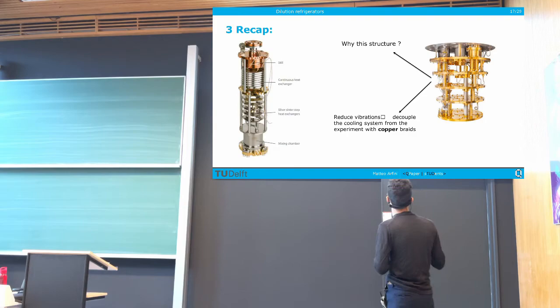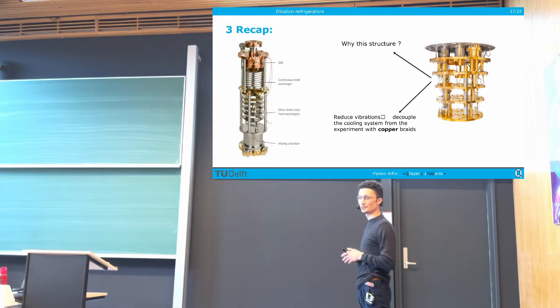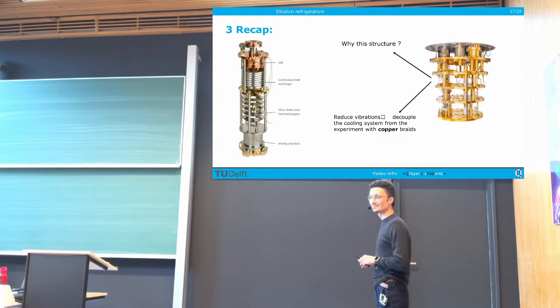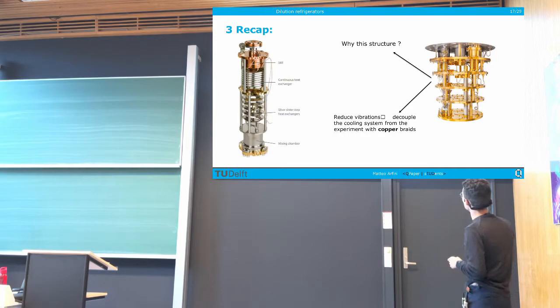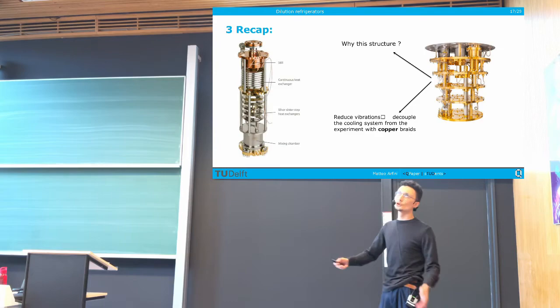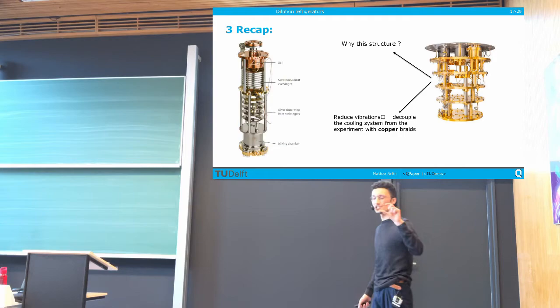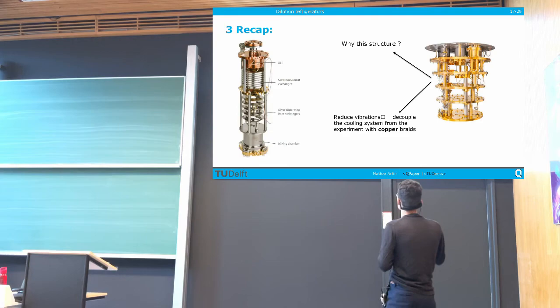Here is an example of a dilution refrigerator for quantum computing. Why does it have this specific step-wise structure from top to bottom? The main reason is to reduce vibrations, because these systems are connected to vacuum pump systems. In modern cryogenics it is usually done in a dry way, meaning special pumping systems are used to reach low temperature. By means of a series of copper braids, we can decouple the experiment from the vibrations occurring in the upper stages.